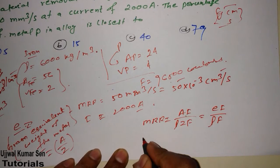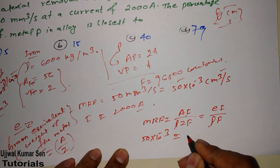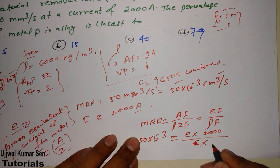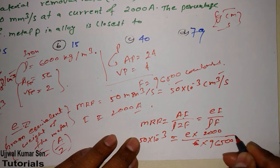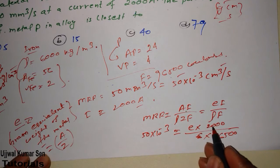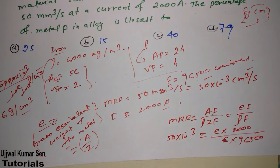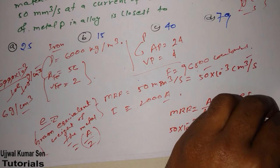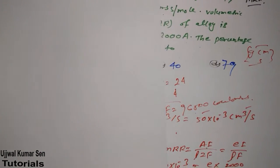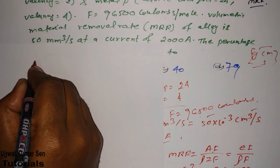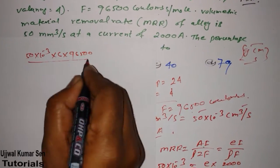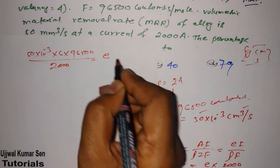MRR we have already given 50 multiple 10 to the power minus 3. Therefore, we can say E multiple I that is current 2000, density is 6, and we have given F is 96500 coulombs per mole. If I'll send this to this side and this to the below side, I'll do just simple calculation. I require one fresh page. Here I got the fresh page.